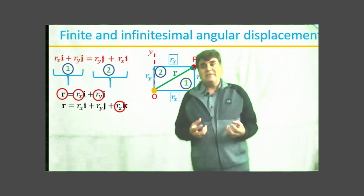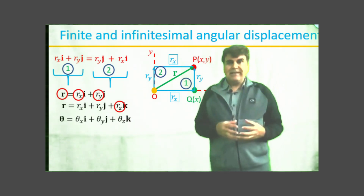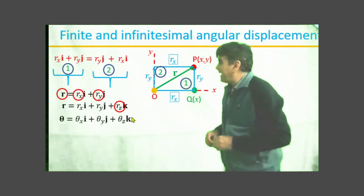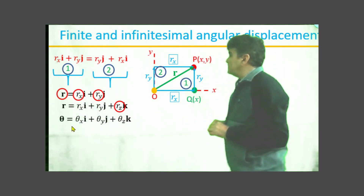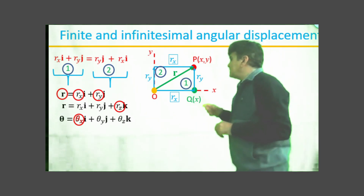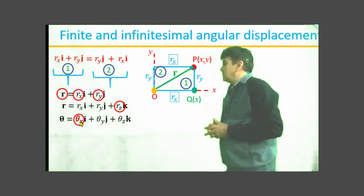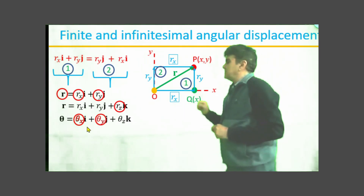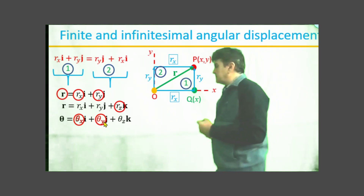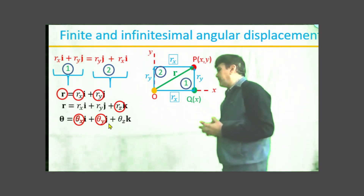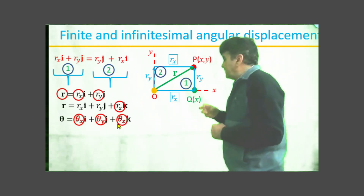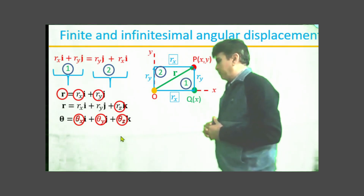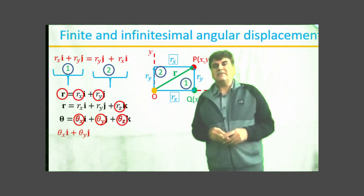Now the question is: can we write a similar relation for finite angular displacement theta? That is, can we write theta = θ_x·i + θ_y·j + θ_z·k, where θ_x is a finite angular displacement around the x-axis, θ_y is a finite angular displacement around the y-axis, and θ_z is a finite angular displacement around the z-axis? Well, the answer is a big no.